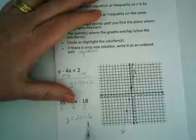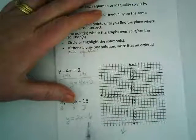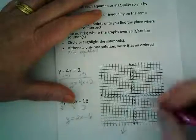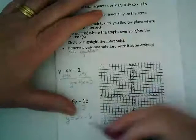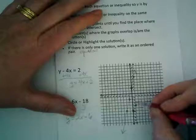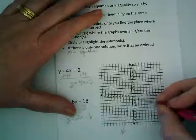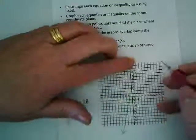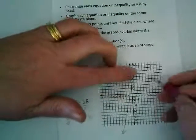Our second line is going to start at a y-intercept of what? Negative 6. And its slope is 2 over 1. And I'm noticing these two are not going to cross in the upper region. They're not crossing up here.